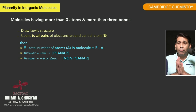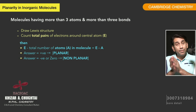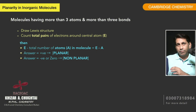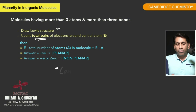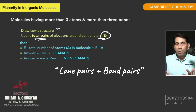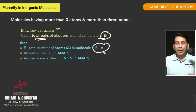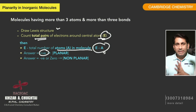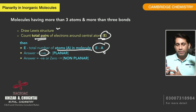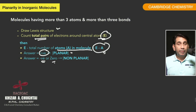Now, if the molecule is having more than three atoms and more than three bonds around the central atom, then here is the rule. Again, you will draw the Lewis structure and check the total pairs of electrons surrounding the central atom — call it E. Then find E minus A, where A is the atomicity, i.e., the number of atoms in the molecule. If your answer for E minus A is positive, the molecule will be planar. If the answer is negative or zero, then the molecule will be non-planar.